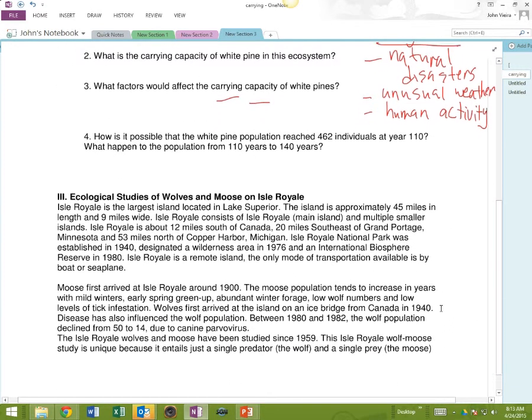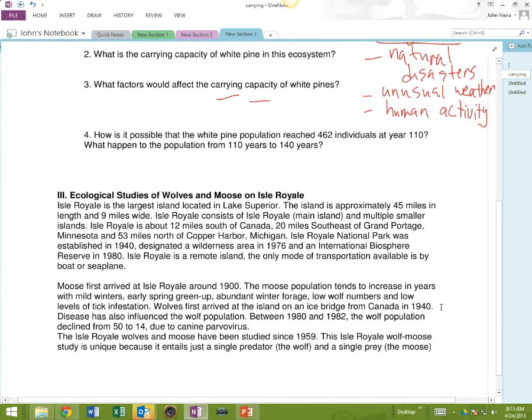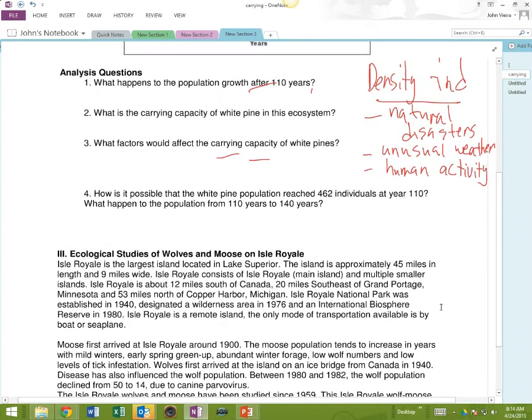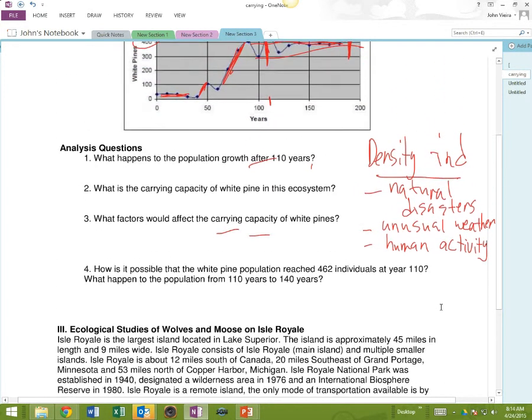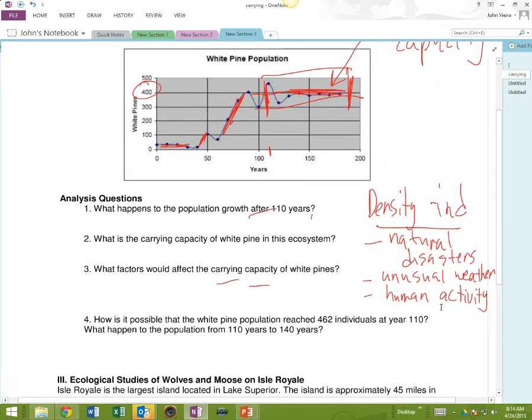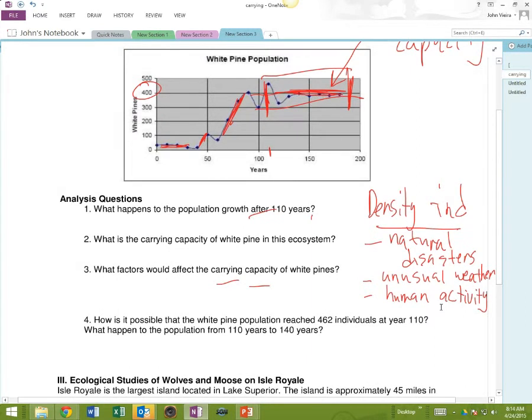Now, we're looking at what happened with the wolves and the moose on Isle Royale in Canada. How is it possible that the white pine population reached 462 individuals at year 110? What happened? How did it get so high right here? Why did it grow exponentially at first? And then, what happened from here to here?